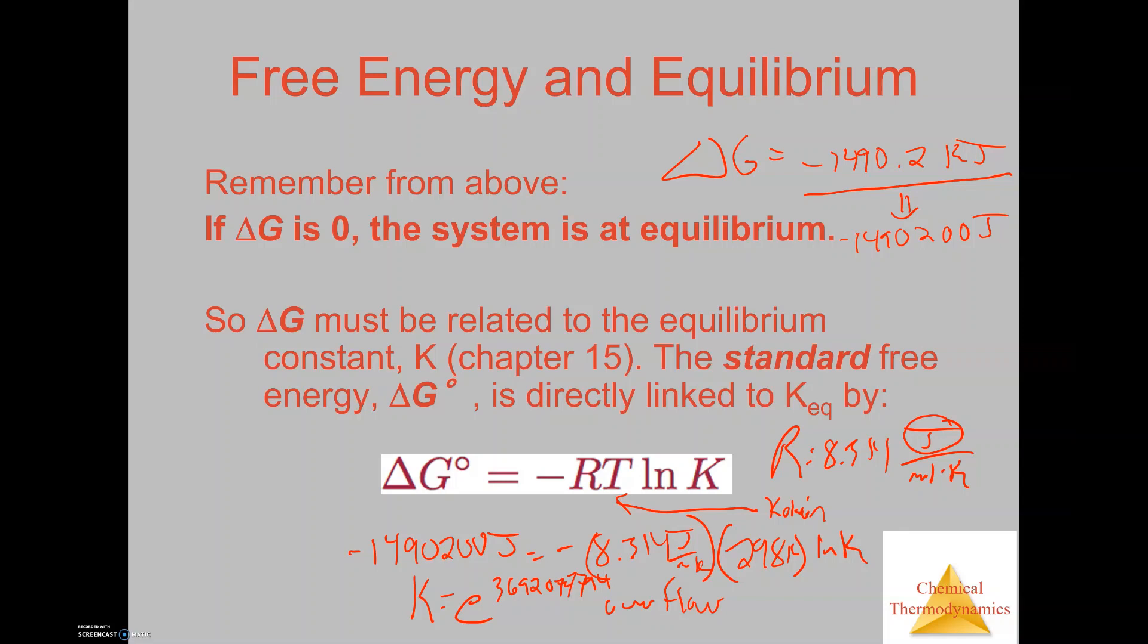What it tells us is that this reaction lies very far to the right-hand side because of how large that equilibrium constant is. We can relate Delta G and equilibrium as long as we know Delta G, we can calculate the equilibrium constant. Or if we know the equilibrium constant, you can calculate Delta G.